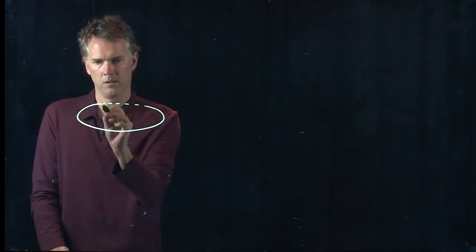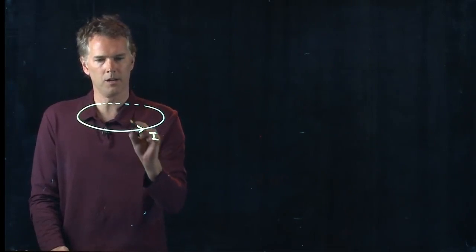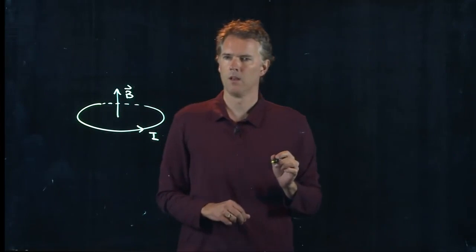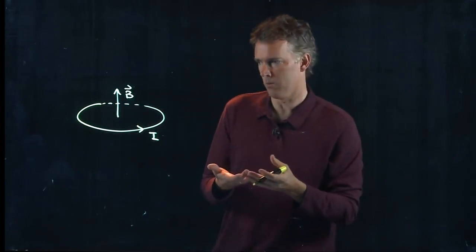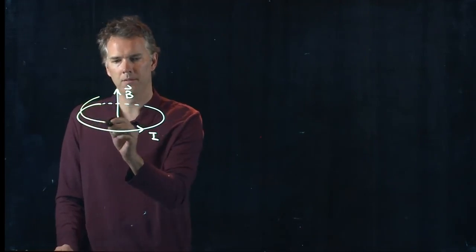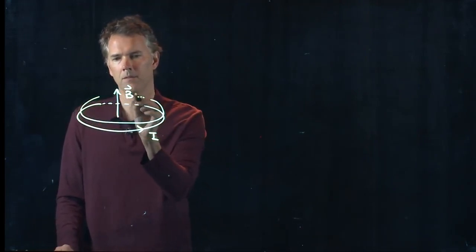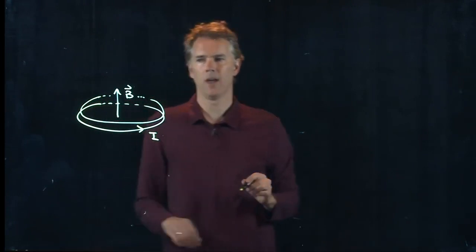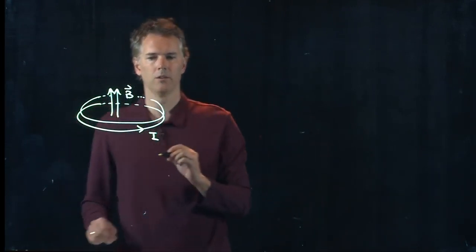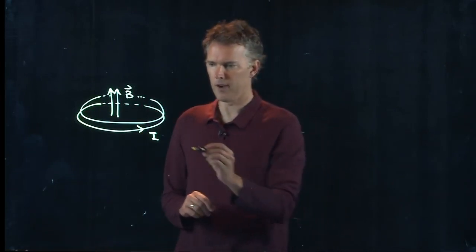I'm gonna take a loop like this and I said the current I is going around like that, that leads to a B field going up. But I could add another one right on top of the first one, and when I do that it's also going to get me another B field going up if I have the same direction of current in it.